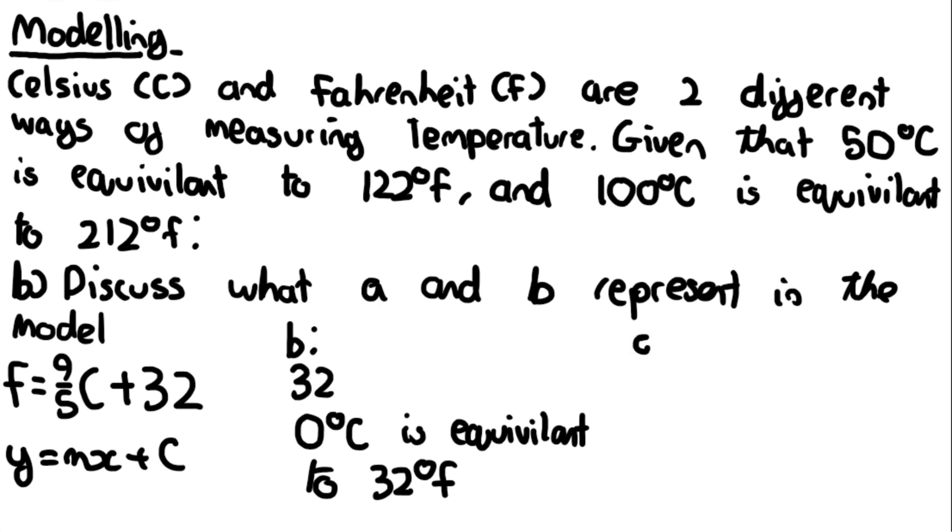What about a? Well, a is the gradient. So what does the gradient actually represent in real life? What it means is that for every 1 degree Celsius increase.